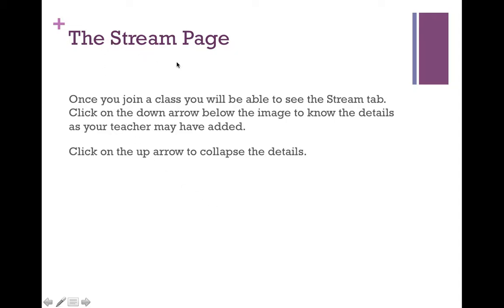There is also something called a stream page. Once you join a class, you will be able to see the stream tab. Click on the down arrow below the image to see the details your teacher may have added for that particular class. If you want to collapse it, click on the up arrow.